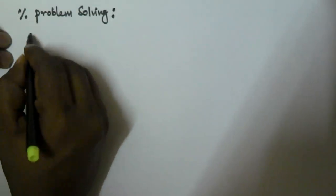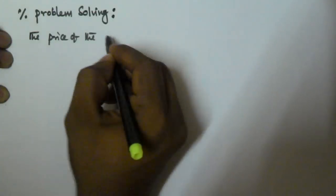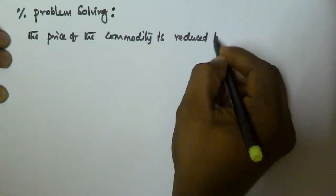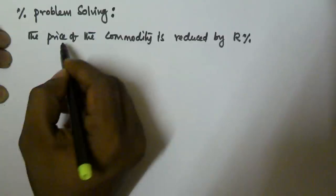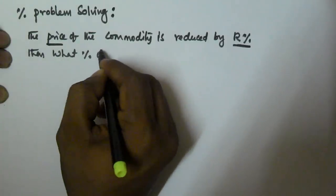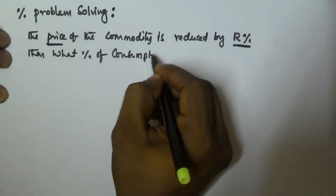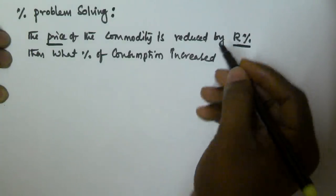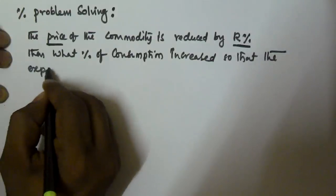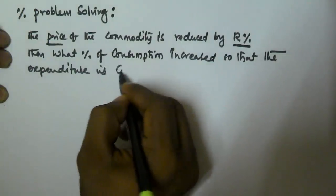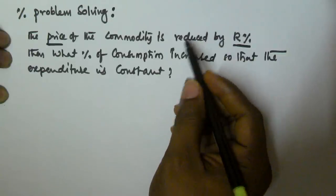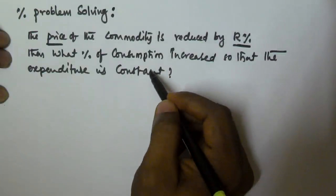Let us assume the price of a commodity is reduced by R%. Then, what percentage must consumption be increased so that expenditure remains constant? Conversely, if the price of the commodity is increased by R%, then what percentage of consumption must be reduced?